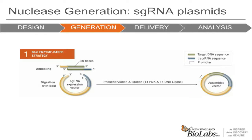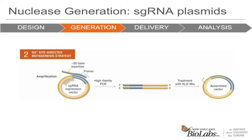The second method is Q5 mutagenesis, developed by the Dickinson lab at UNC. You begin with an sgRNA expression vector you already have or obtained from a place like Addgene. By designing primers that contain a new target sequence, you can easily insert or replace an existing sgRNA target sequence. The Q5 polymerase is able to replicate the whole plasmid using two abutting primers. By adding in a 20-nucleotide sequence on the tail end of one of the primers, you are able to add this sequence to the new plasmid. The KLD mix contains a kinase to phosphorylate the ends of the PCR products, a ligase for ligation, and DpnI enzyme to digest away the parental methylated vector.